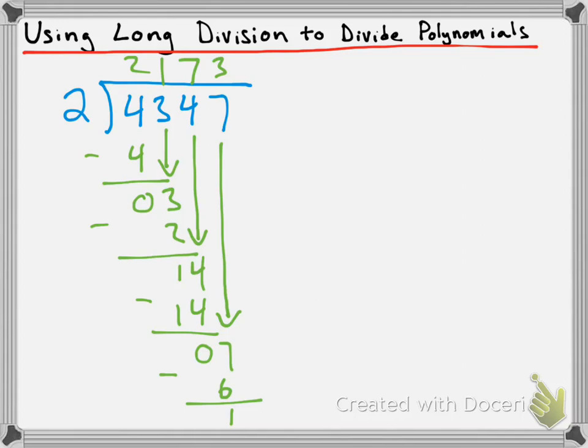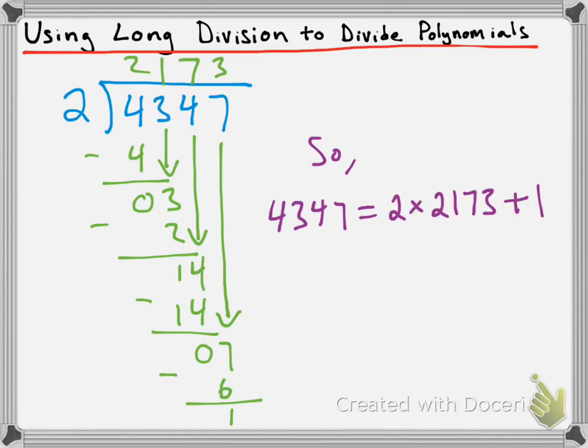So we get a remainder of 1 in this case. You guys probably have learned in the past how to deal with remainders such that you don't actually get a remainder. But we're going to stop here and consider what this means. Once we have a remainder, what this means is that we can say 4,347 is equal to 2 times 2,173 plus our remainder of 1. So we have 1 more than a full multiple of 2. That's what we mean by a remainder of 1.